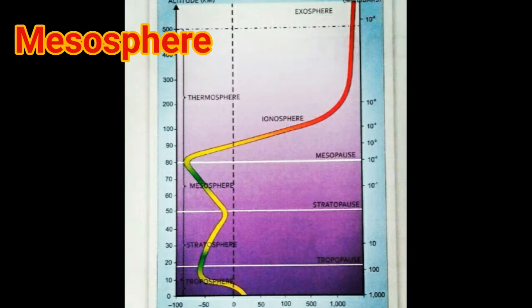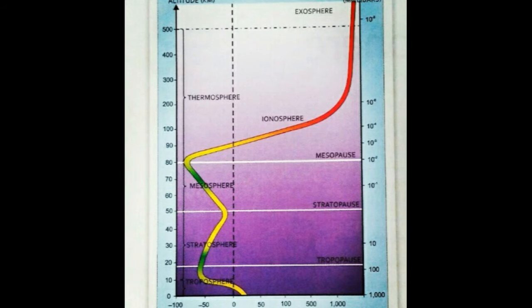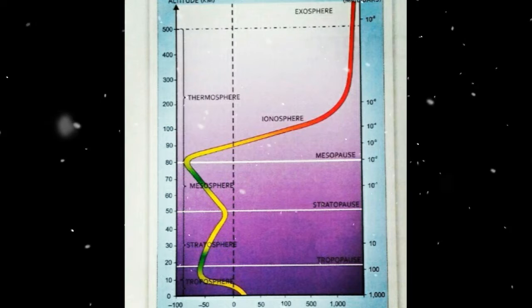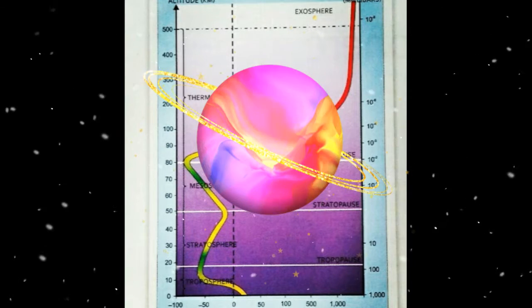The mesosphere lies above the stratosphere and extends from about 50 km to about 80 km above mean sea level. The temperature decreases with increase in height and reaches about minus 100 degrees Celsius. This is the coldest layer. The meteors which come from outer space burn up in this layer.